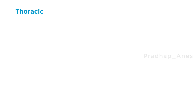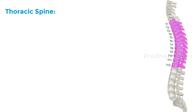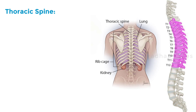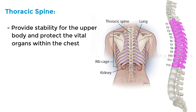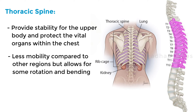The thoracic spine consists of 12 vertebrae that connect to the rib cage. These vertebrae provide stability for the upper body and protect the vital organs within the chest. The thoracic spine has less mobility compared to other regions, but allows for some rotation and bending.